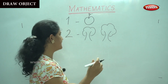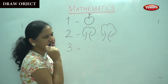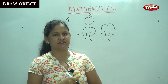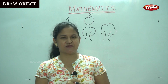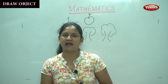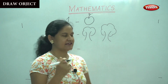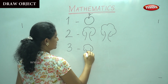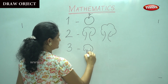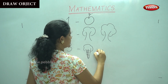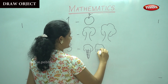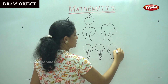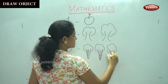Shall we move on to the next number? Number 3. What shall we draw for number 3? Can we think of any objects that can be drawn for number 3? We all like to eat ice cream, children. So, I'm going to draw an ice cream. Are you ready to draw with me? It is 1, 2, 3. So, how many ice creams have we drawn? 3 ice creams.